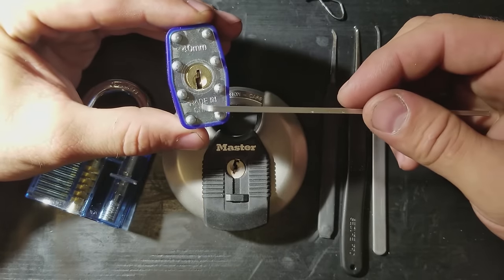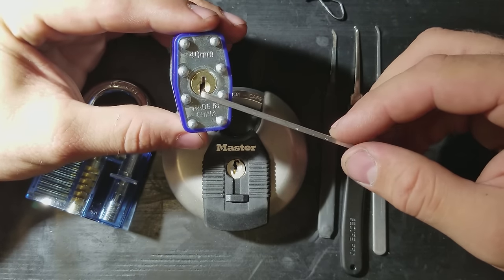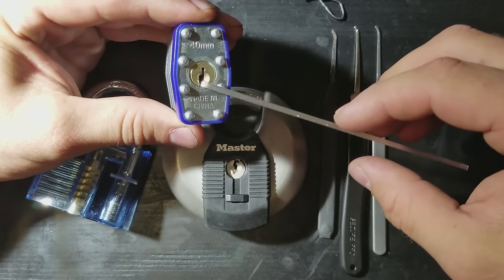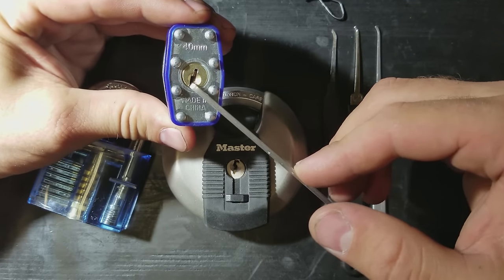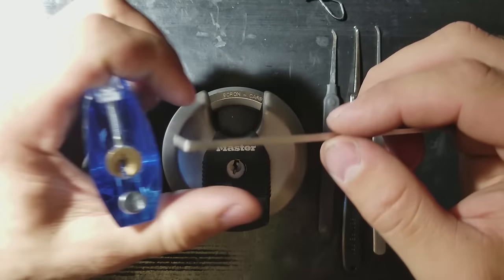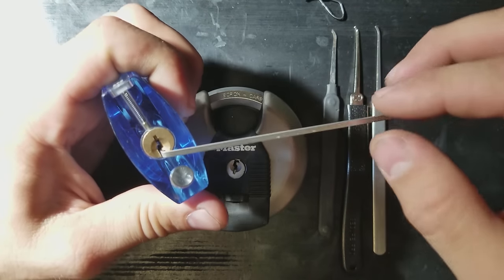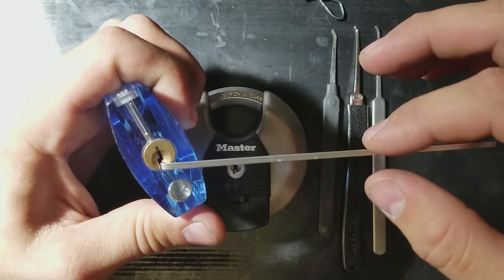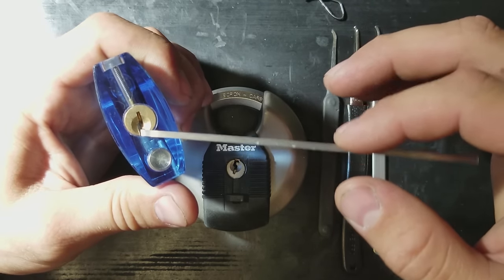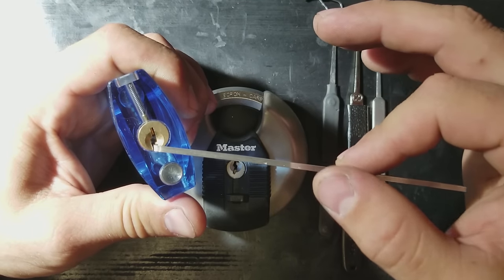The important thing about the tension wrench is that it applies that rotation to the cylinder. You can see that cylinder rotating. Without that rotation, you're never going to make this lock open. You can see it here, too, on this practice lock, that if I put the tension wrench here in the cylinder, I can get this little bit of rotation on the lock. And that's the fundamental thing you need to start picking.